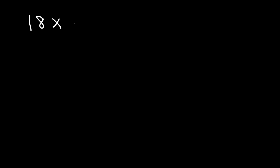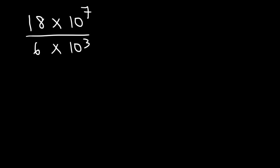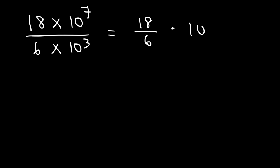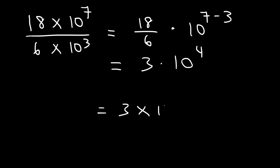Now let's talk about dividing two numbers using scientific notation. Let's start with a simple example: 18 times 10 to the 7 divided by 6 times 10 to the 3. The first thing to do is divide 18 by 6. When you divide two numbers with the same base, you subtract the exponents — so this is 10 to the 7 minus 3. 18 divided by 6 is 3, and 7 minus 3 is 4. So the answer is 3 times 10 to the 4.